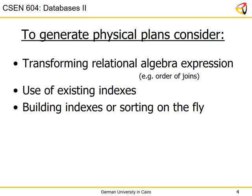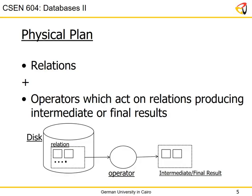All these things are decided in the physical plan. At the lowest level, a physical plan is really two things: relations stored on disk, and what we call operators — low-level operators which act on these relations to produce some intermediate or final result. The basic building block of a physical plan is called an operator, historically named from the early 1960s. These operators will process the pages and produce some result.